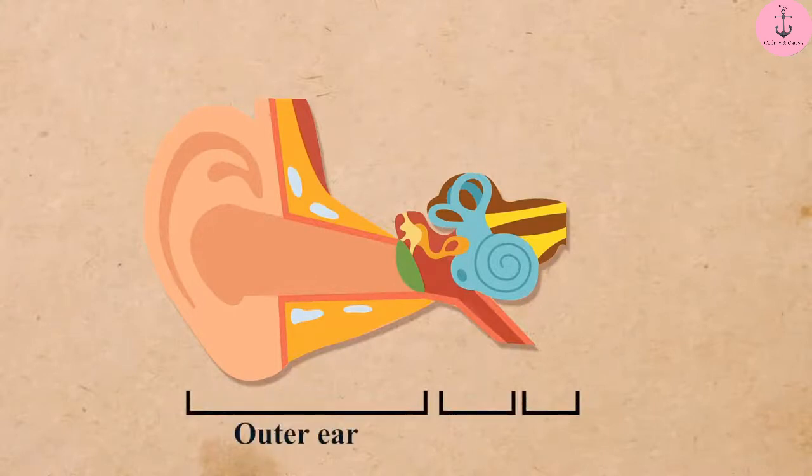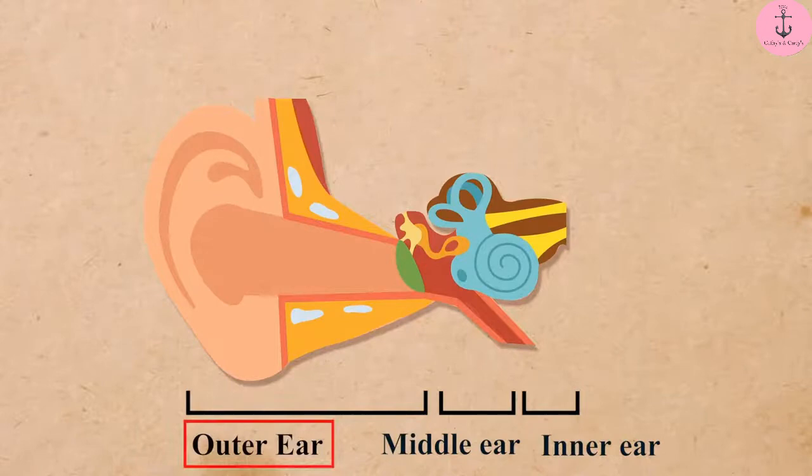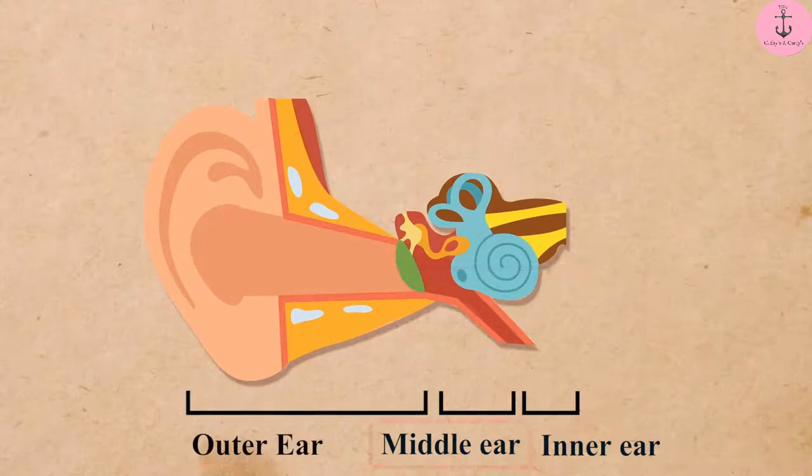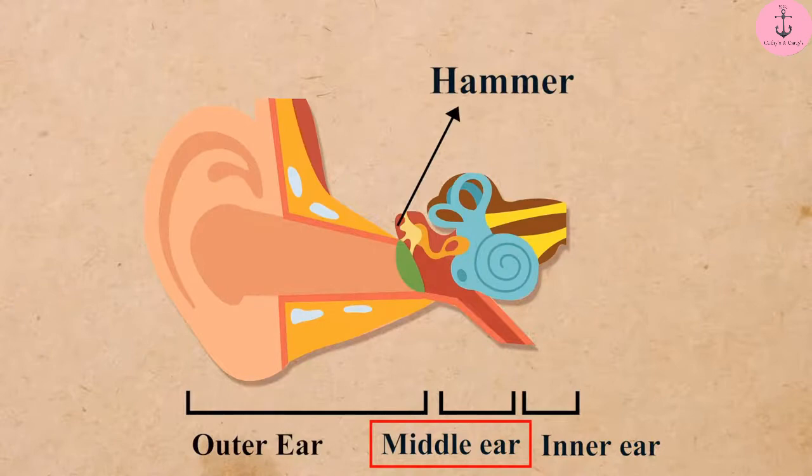The outer ear, the middle ear, and the inner ear. The outer ear includes pinna and the auditory canal. The middle ear mainly includes three bones: the hammer, the anvil, and the stirrup.